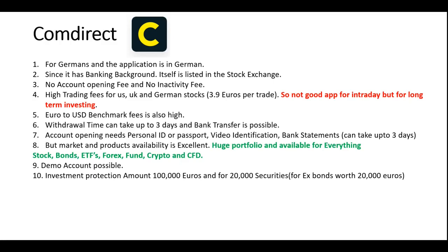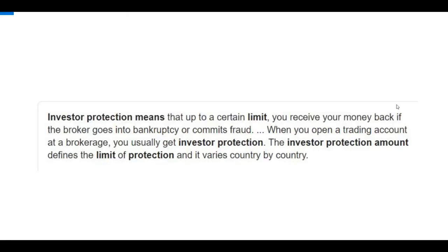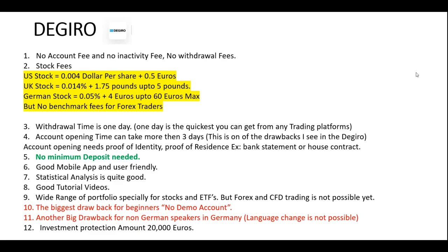The investment protection amount is up to 100,000 euros, and up to 20,000 euros for securities like bonds or ETFs in long-term investments. Investment protection means every bank or broker gives you a certain limit — commonly around 20,000 euros or dollars — and in case the broker goes bankrupt, this amount is guaranteed back to you. It's essentially like an insurance.